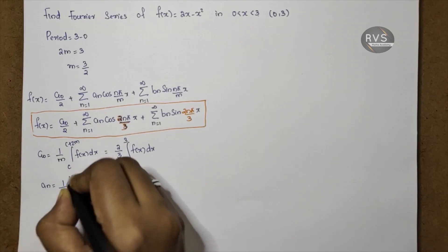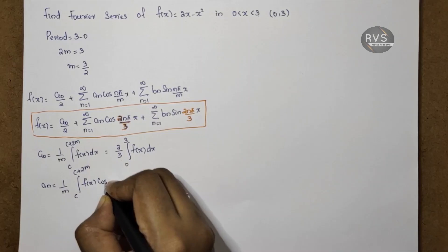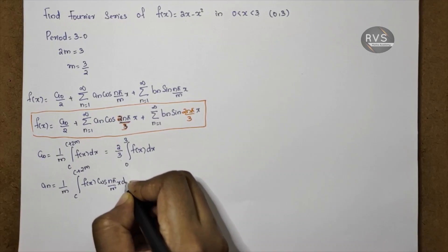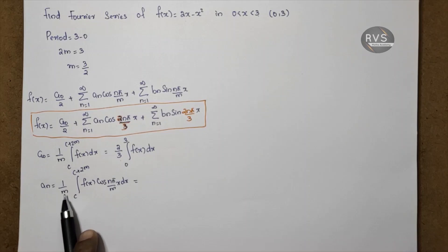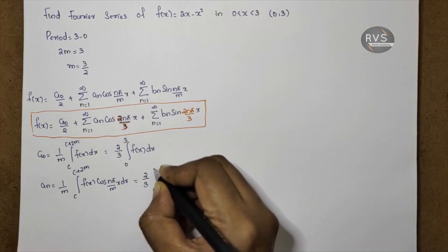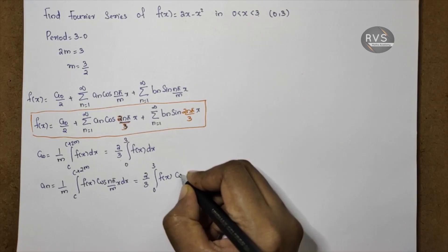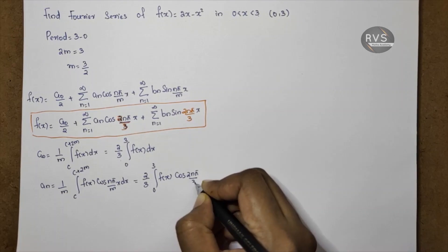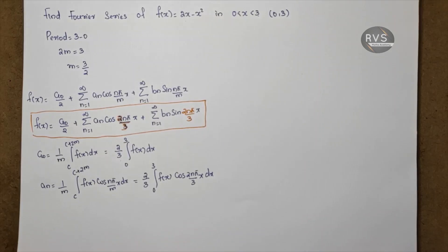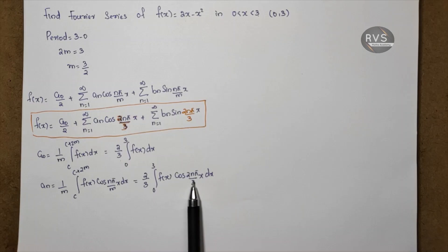The formula for an is: an is equal to 1 by m into integral from c to c plus 2m of F of x into cos n pi by mx dx. With m equal to 3 by 2, the reciprocal is 2 by 3, and the integral becomes the integral from 0 to 3 of F of x into cos 2n pi by 3x dx.